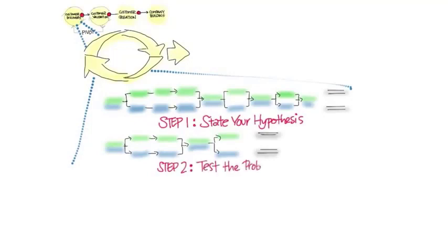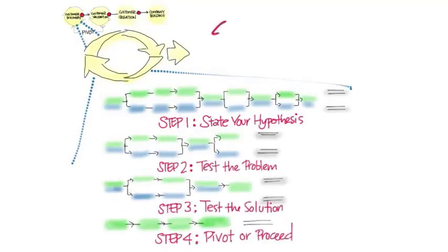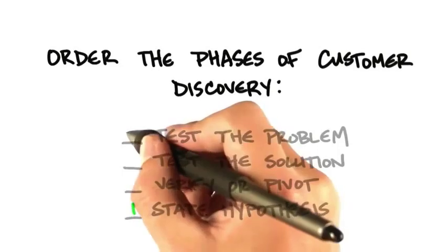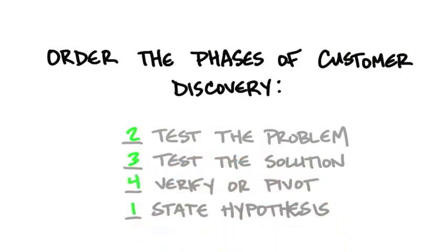Let's take a look at customer discovery one more time in just a different way. Again, if you're using the startup owner's manual, you'll notice these two tracks. And remember I said you have one track for physical, one track for web mobile. And all that is are the different tactics for one channel versus another. But the strategy is the same: state your hypothesis, test the problem, test the solution, pivot and proceed. And remember, all of this is going on outside the building in front of customers. So earlier we looked at the four phases of the entire customer development process. But now let's take a look at the customer discovery process itself and order its phases. And so the phases of customer discovery start with stating your hypotheses, testing the problem, testing the solution, or verifying or pivoting.